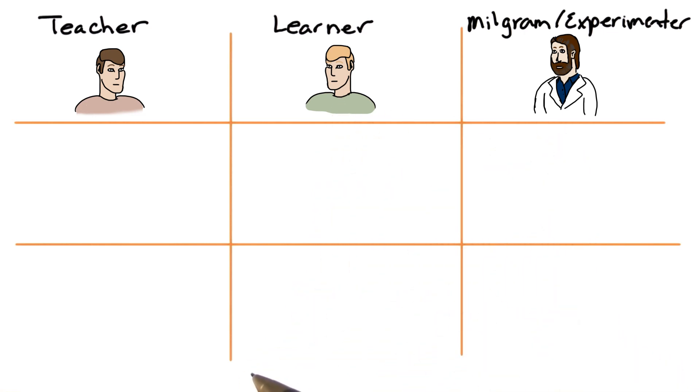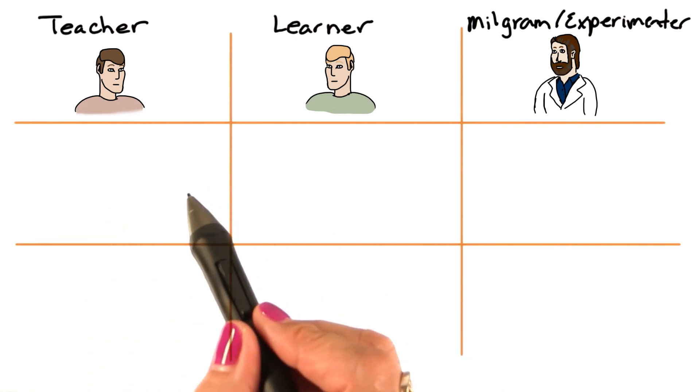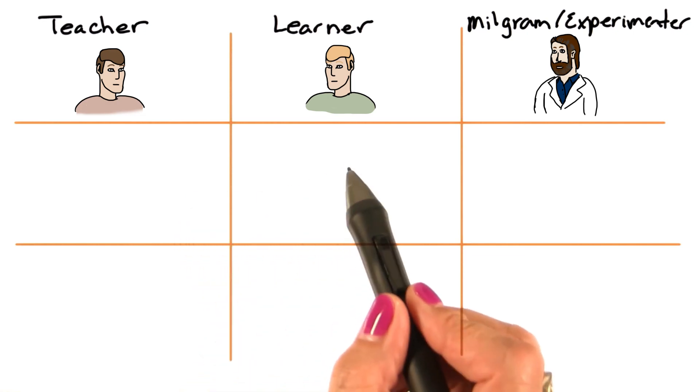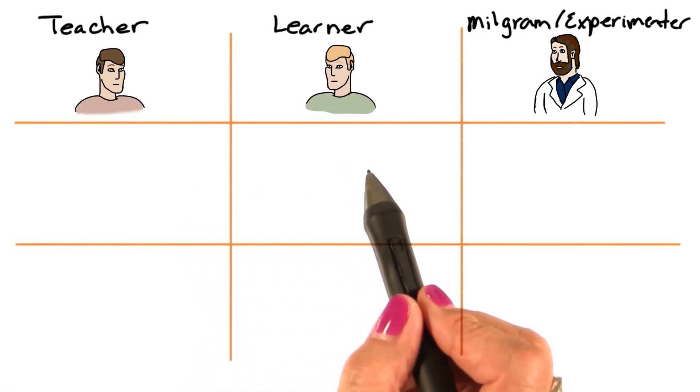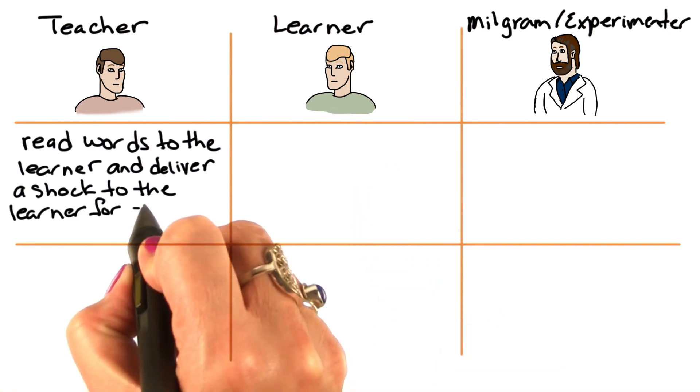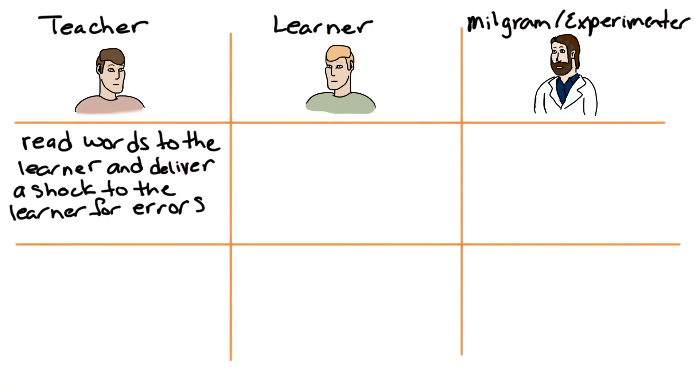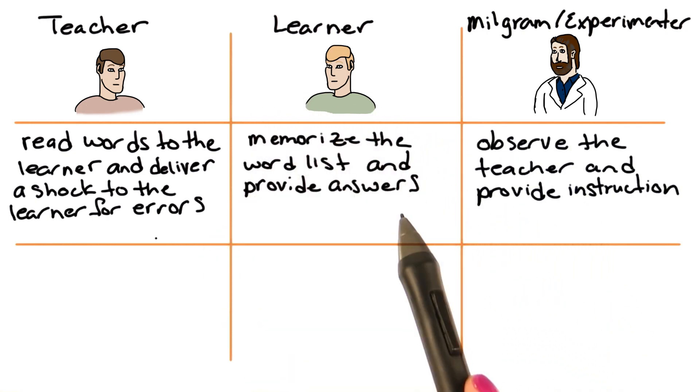Now remember, the participant thought this was a study on memory. So Milgram told the participant that he was going to read a series of words, and that the other participant, the learner, who was the confederate, would have to remember those words. Every time the learner would get a word incorrect, the teacher was to deliver a shock.